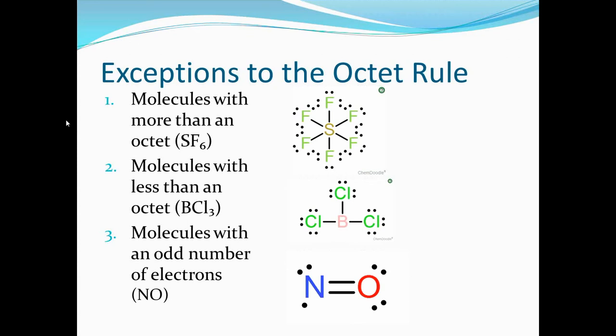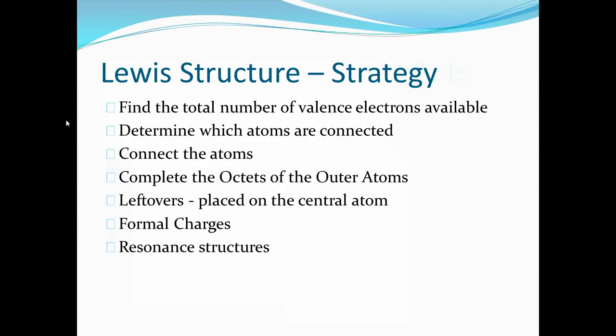Finally we have molecules with an odd number of electrons. Our example here is nitric oxide or nitrogen monoxide in which oxygen has an octet but nitrogen only has five electrons and don't forget the lone electron is called a free radical.